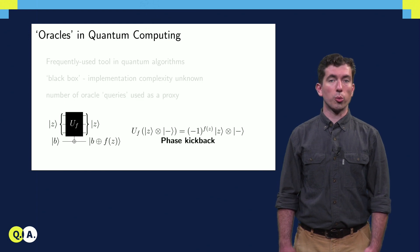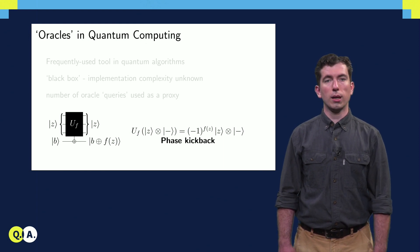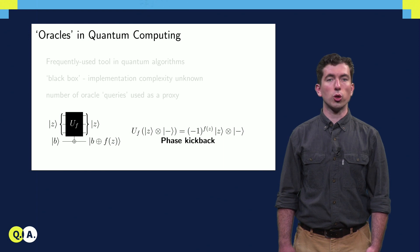The oracle for the lightbulb problem will look like this. We input a configuration Z, some eigenstate in the Z basis on each qubit, and if the bulb would light up, an ancilla qubit gets flipped.